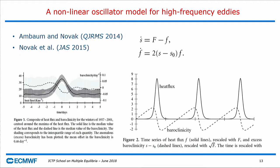High baroclinity makes eddy growth faster, but the eddies extract zonal available potential energy so baroclinity decreases, giving a nonlinear oscillation. They estimated the lag between growth of baroclinic eddies — quantified by meridional heat flux — and baroclinity, finding eddy growth lags by a couple of days after the maximum in baroclinity. If this is an important mechanism, you might argue: your model doesn't take this into account, so what happens if baroclinic eddies consume the zonal flow?